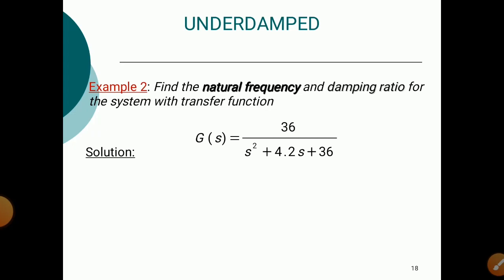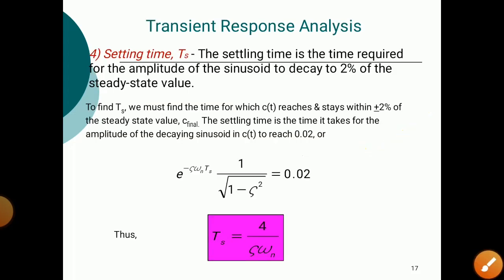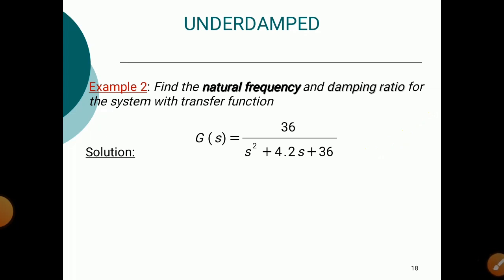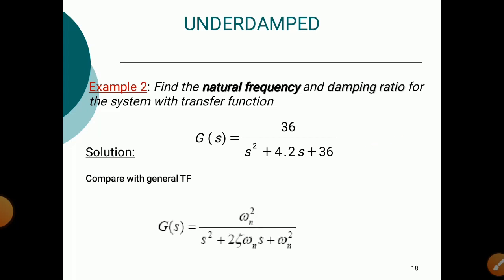Example for underdamped system: Find the natural frequency and damping ratio for the system with transfer function G(s) = 36 / (s² + 4.2s + 36). Comparing with the general transfer function ωn² / (s² + 2ζωns + ωn²): the numerator gives ωn² = 36, so ωn = 6. The denominator gives 2ζωn = 4.2, so ζ = 0.35.